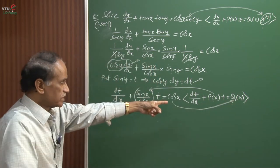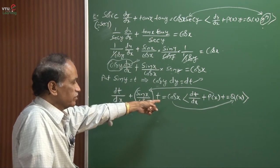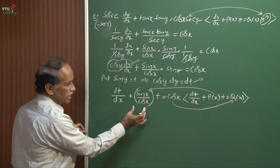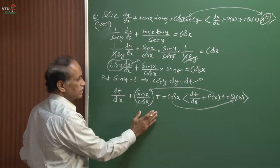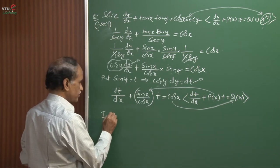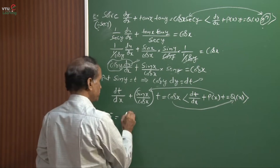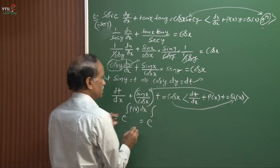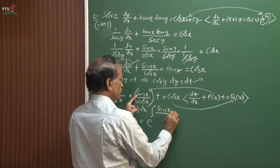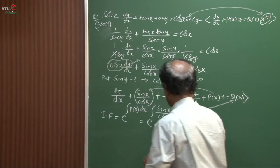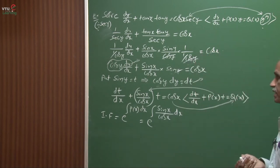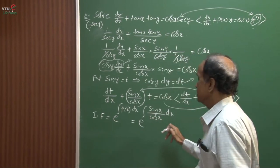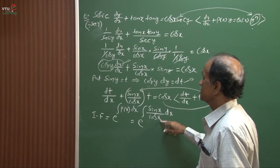Now I will calculate the integrating factor: IF = e^(∫P(x)dx) = e^(∫(sin(x)/cos(x))dx). This is the integral of tan(x). Writing sin(x)/cos(x), the differentiation of the denominator cos(x) gives −sin(x), which appears in the numerator. Using the formula ∫f'(x)/f(x)dx = log|f(x)| + c, the integration gives −log|cos(x)|.